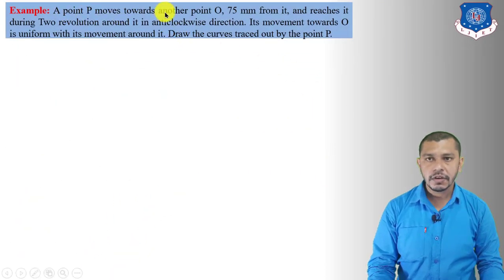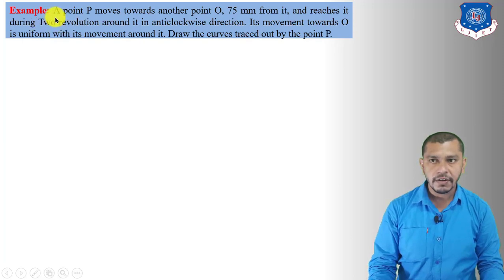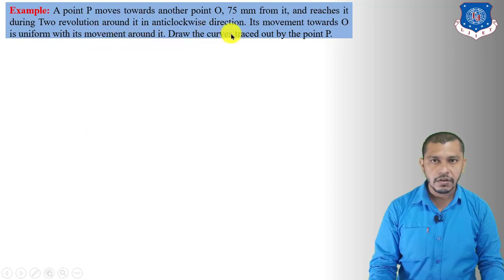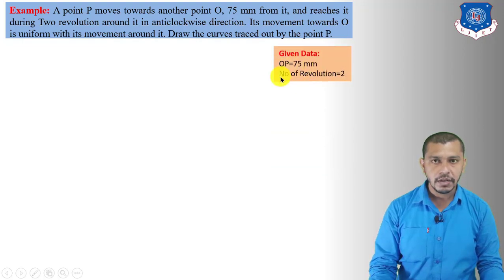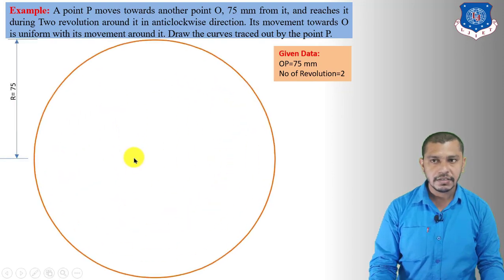Now let's move to the next problem with changed data. A point P moves towards another point O, 75 mm from it, and reaches it during two revolutions around it in anticlockwise direction. Its movement towards O is uniform with its movement around it. Given data: OP = 75 mm, number of revolutions = 2 convolutions, which equals 720 degrees.